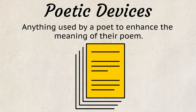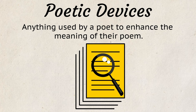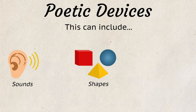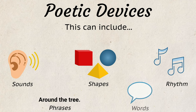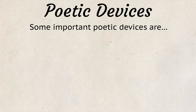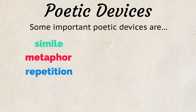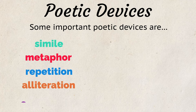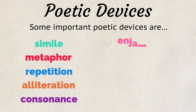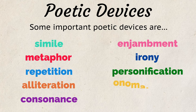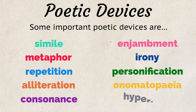A poetic device is anything used by a poet to enhance the meaning of their poem. This can include sounds, shapes, rhythms, phrases, and words. Some important poetic devices are simile, metaphor, repetition, alliteration, consonance, enjambment, irony, personification, onomatopoeia, and hyperbole.